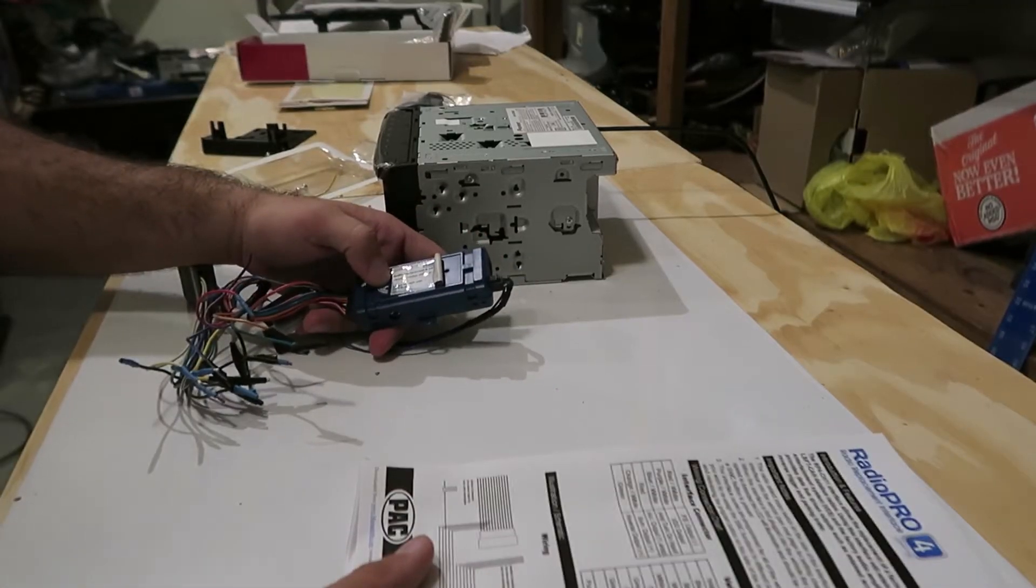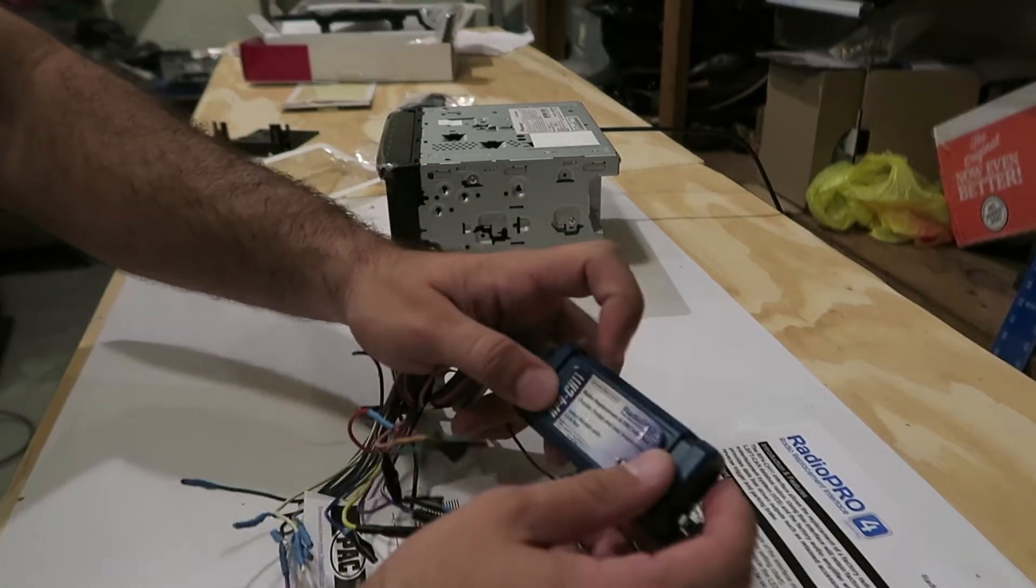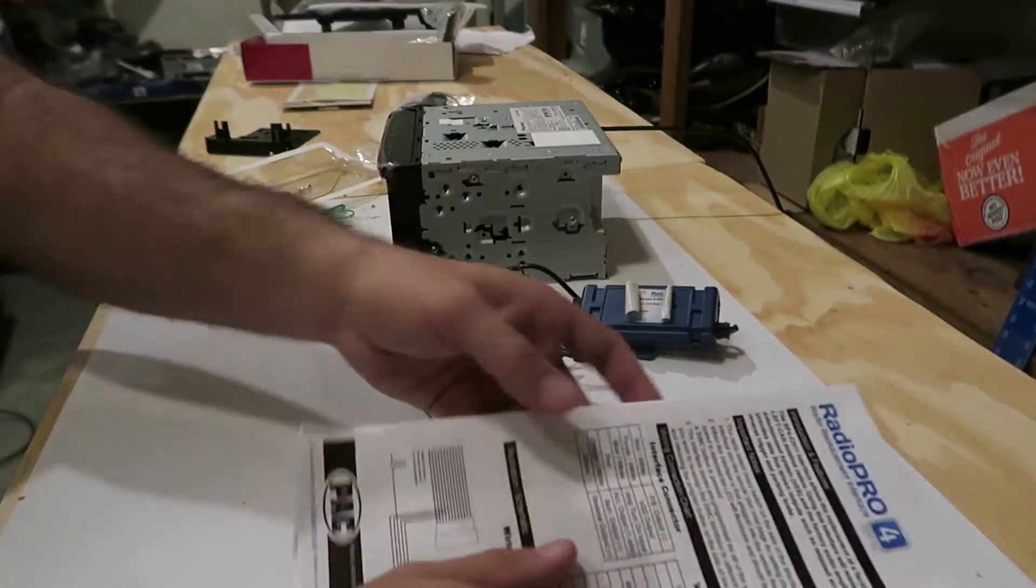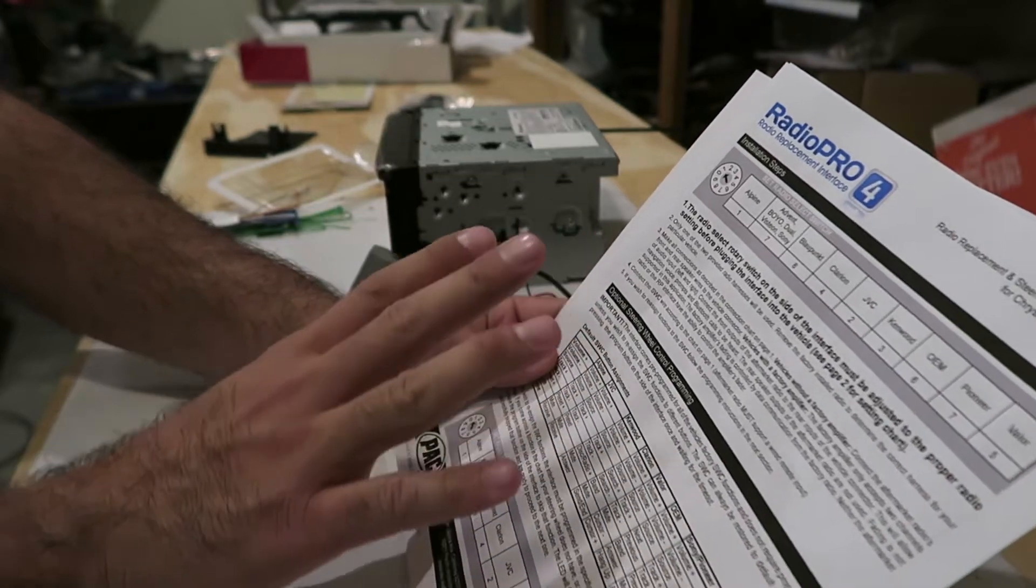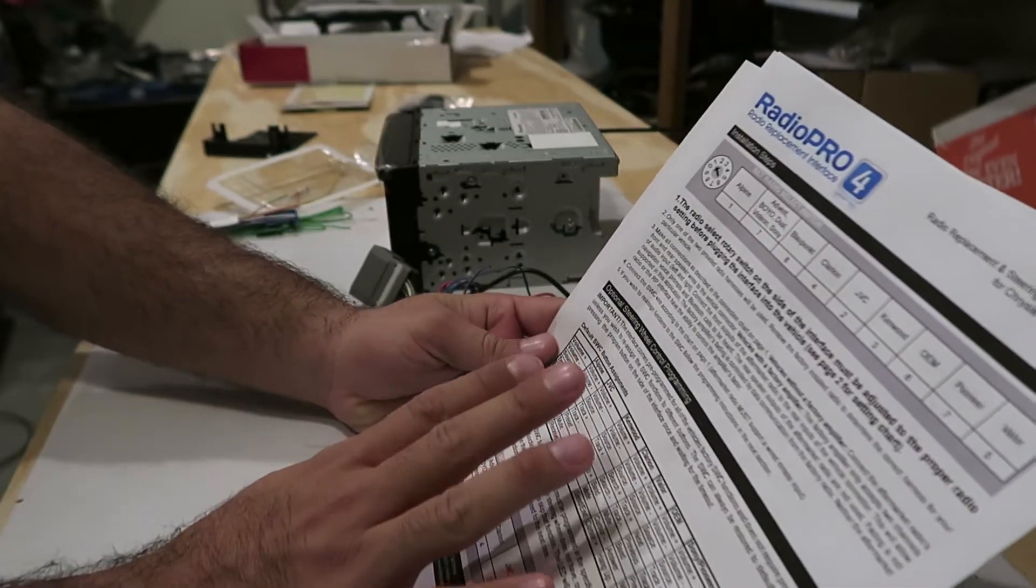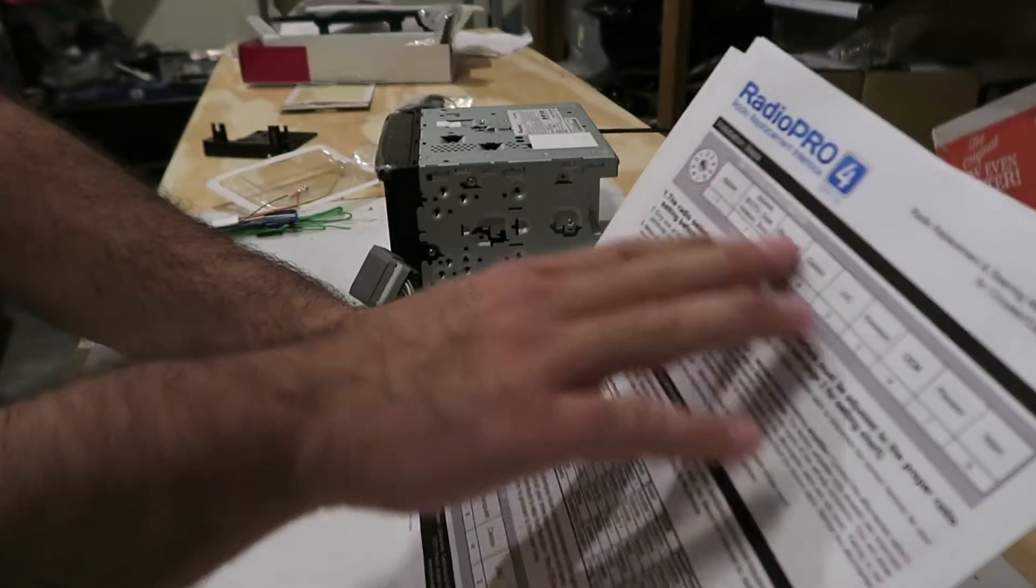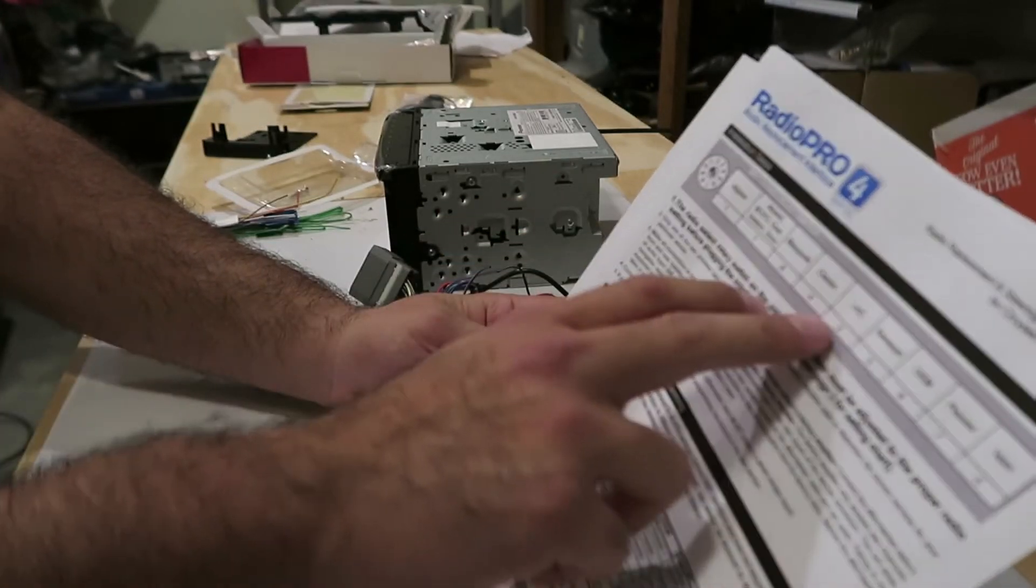You're going to download the manual for the interface device that you have. So for me it's the Radio Pro 4 so I just went to their website and got the manual for how to connect it and you're going to see for different receiver models and companies they have different controls and they actually tell you which radio select switch to choose.